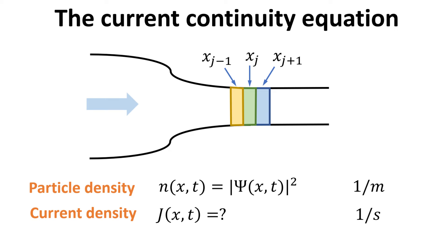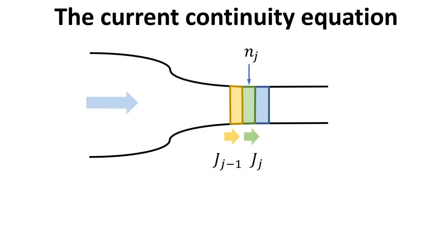In this one-dimensional example, the particle density has a dimension of 1 over length, while the current density is 1 over time. Now, let's focus on the particle density in pillbox j, denoted by n j. The current density j sub j minus 1 describes the particle current that flow into the pillbox j, and the current density j sub j describe the particle current flowing out of pillbox j into j plus 1.